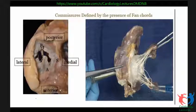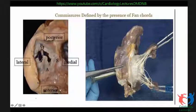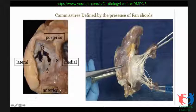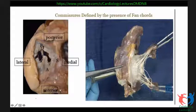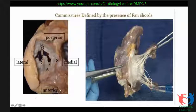The commissures are defined, just like in the mitral valve, by the presence of fan chordae. As seen in this specimen, there is the posterior leaflet, the septal leaflet, and the anterior leaflet, and all the commissures are well defined with visible fan chordae.